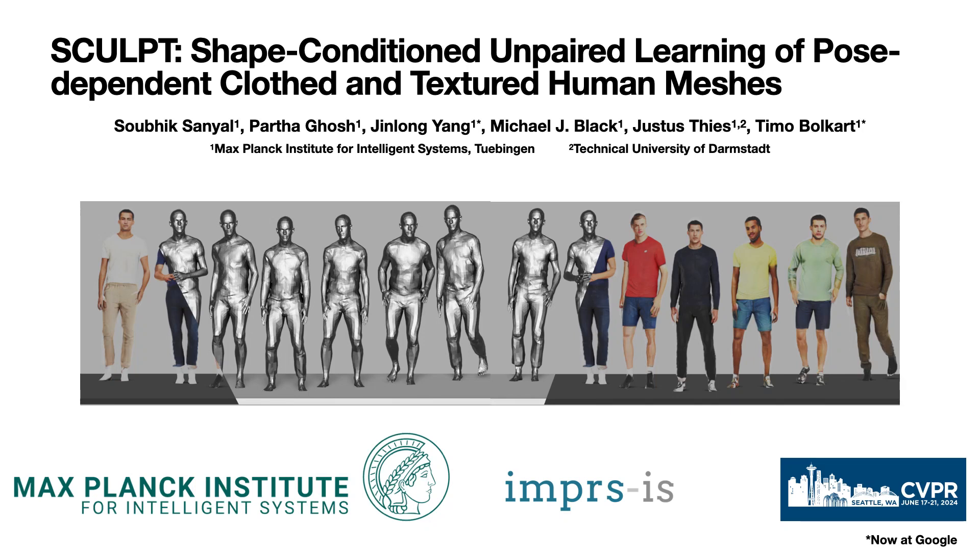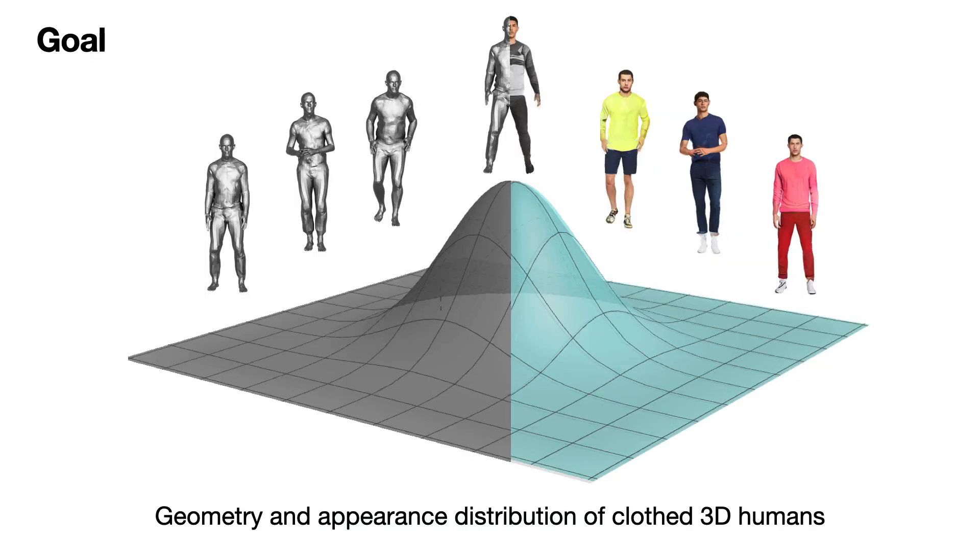We present SCULPT, which stands for Shape Conditioned Unpaired Learning for Pose-Dependent Textured Human Meshes. The goal of SCULPT is to learn the geometry and appearance distribution of clothed human bodies.